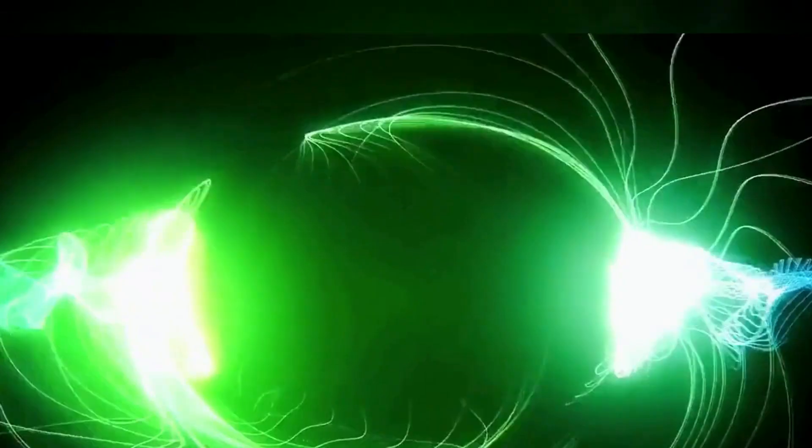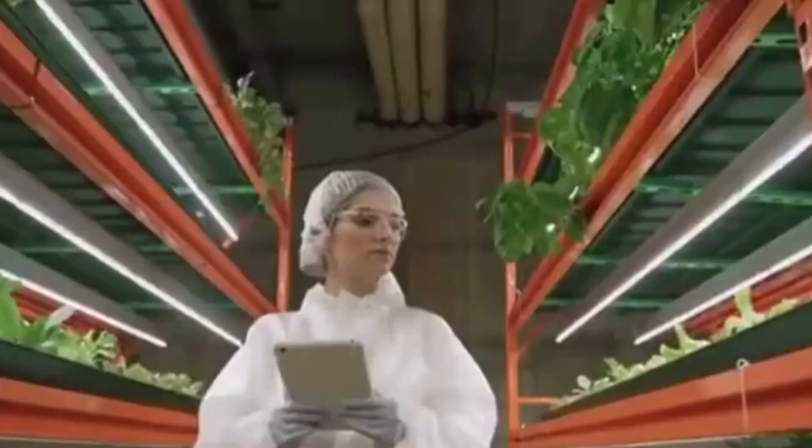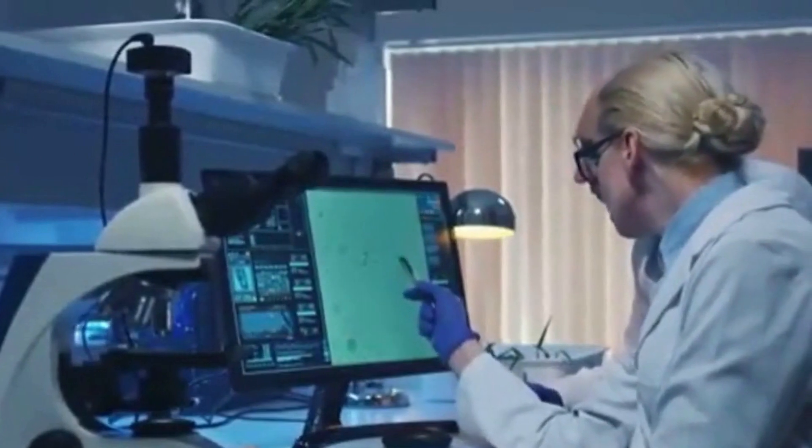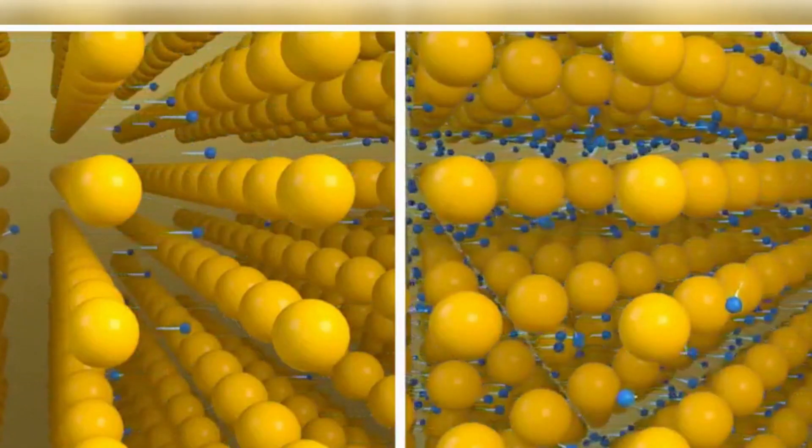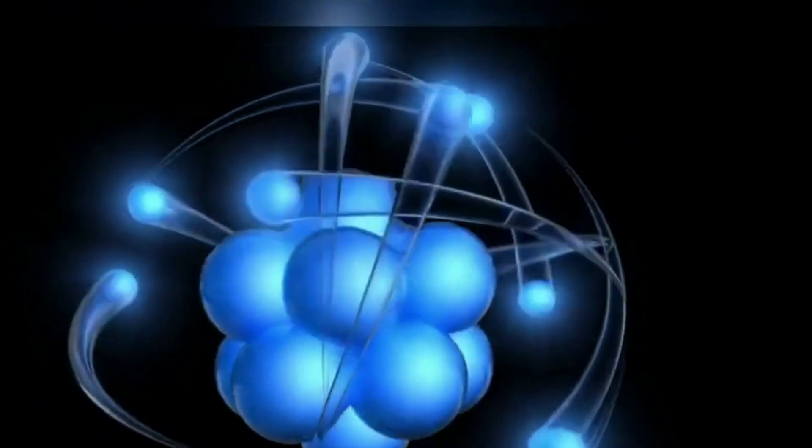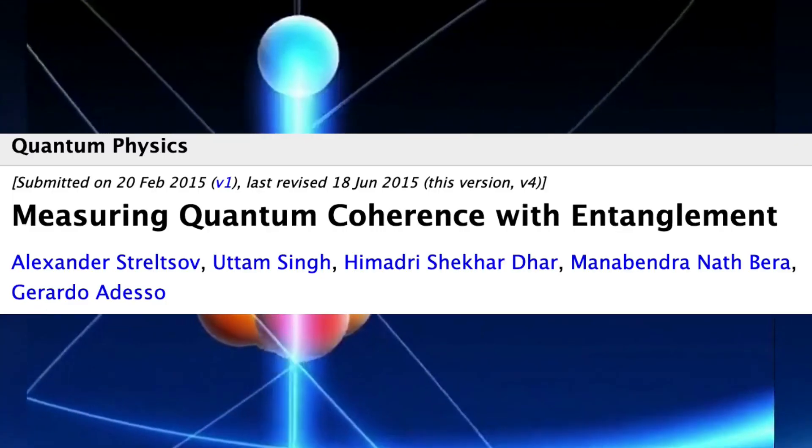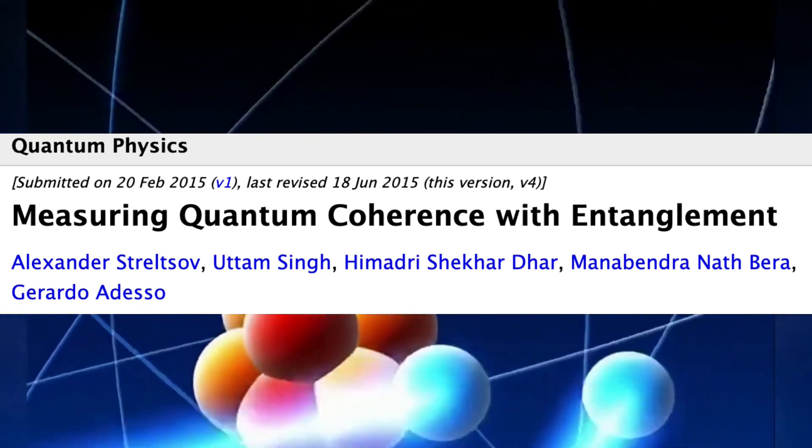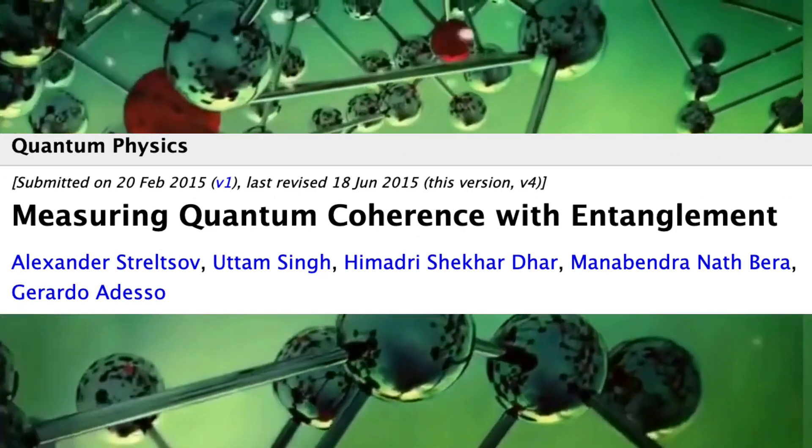Instead of following a single path and hoping it leads to the reaction center, the electron takes advantage of its wave-like nature and explores all available paths simultaneously, unfailingly finding the reaction center every time. Quantum coherence, closely related to quantum entanglement, enhances the efficiency of energy transfer in plants.